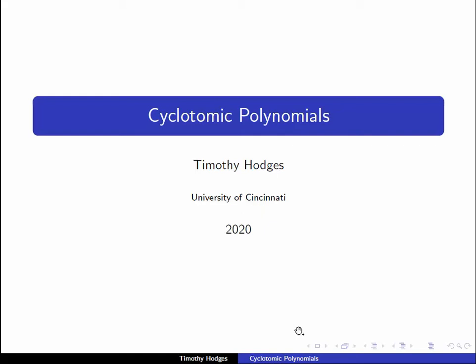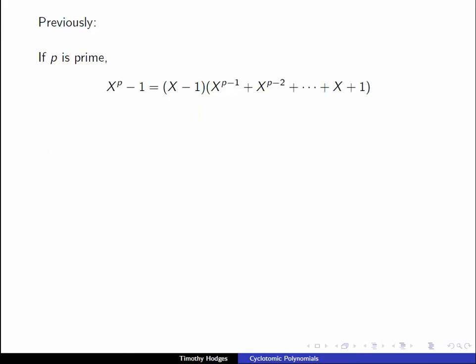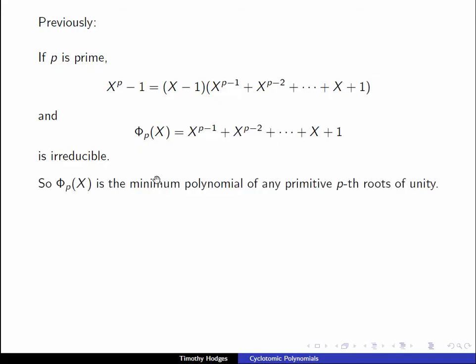We now look in more detail at cyclotomic polynomials. These are the minimum polynomials of the primitive nth roots of unity. Let's recall what we know so far. Previously we observed that when p is prime we have the factorization x to the p minus 1 equals x minus 1 times this polynomial here, and using Eisenstein's criteria we could show that phi_p of x is irreducible. This tells us that phi_p of x is the minimum polynomial of each and every primitive pth root of unity.